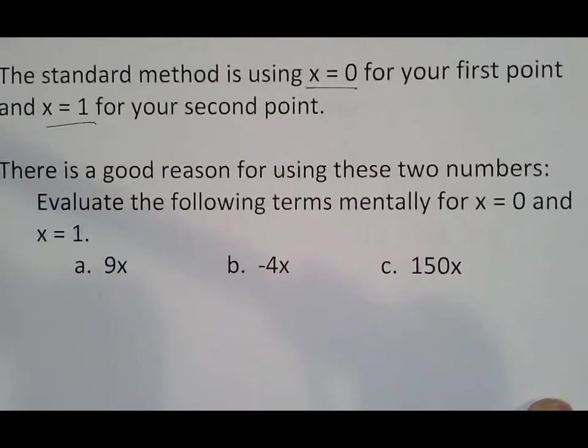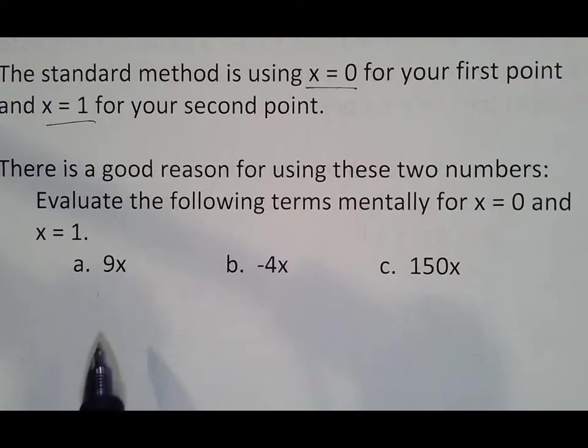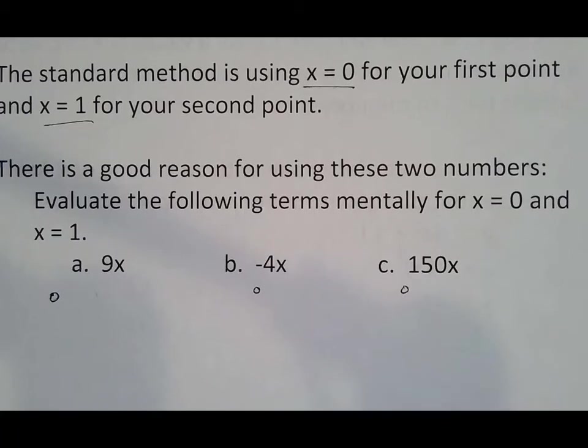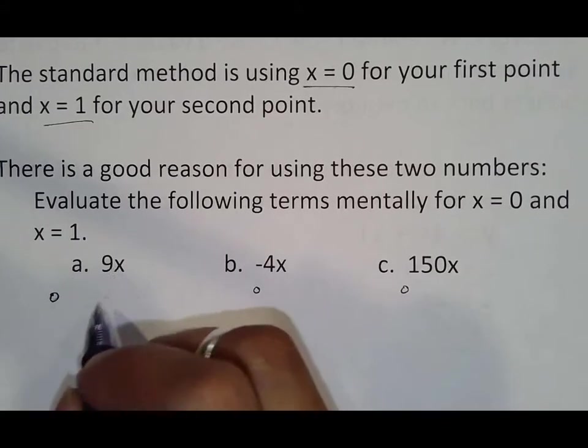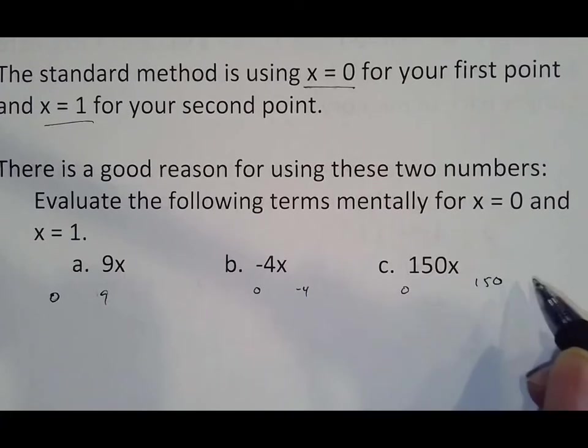Let's mentally evaluate these answers for x equals 0 and x equals 1. So for x equals 0, what's 9 times 0? Well, that's 0. What's negative 4 times 0? That's 0. What's 150 times 0? That's 0. What's 9 times 1? Well, that's 9. Negative 4 times 1? Well, that's negative 4. What's 150 times 1? That's 150.